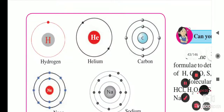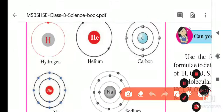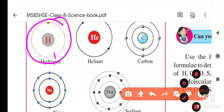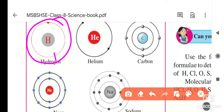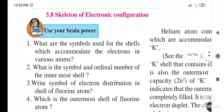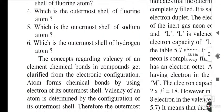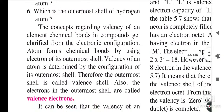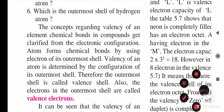For hydrogen, it is very easy. Hydrogen's atomic number is 1, and it has only one shell — the K shell — which is also its outermost shell. So the K shell is the outermost shell for hydrogen.